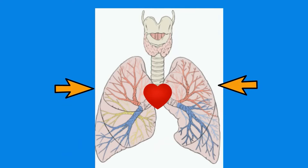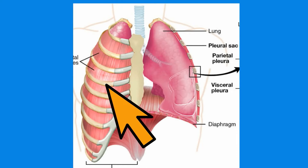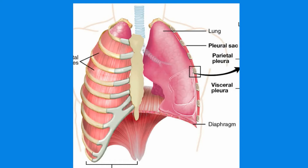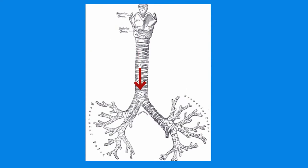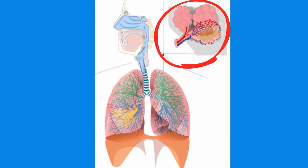Your heart pumps blood to the lungs where oxygen is exchanged for carbon dioxide. Your right lung is larger than your left lung and your lungs weigh around 3 pounds. Air travels down your trachea and into two tubes called the bronchus — you have a left and a right bronchus. The bronchus then branches into bronchi, which branch into even smaller tubes called bronchioles. At the end of the bronchioles are tiny air sacs called alveoli.